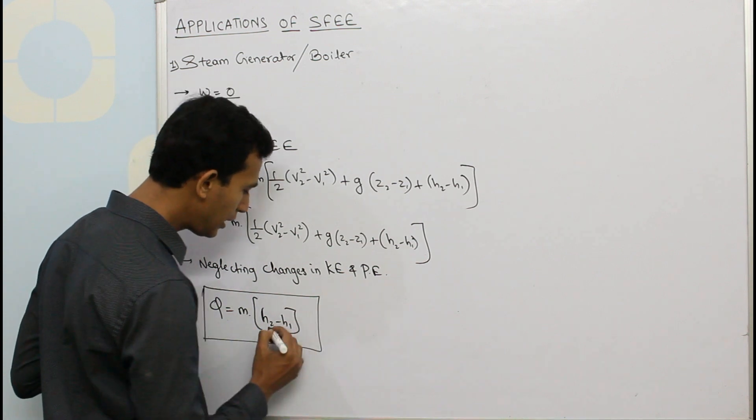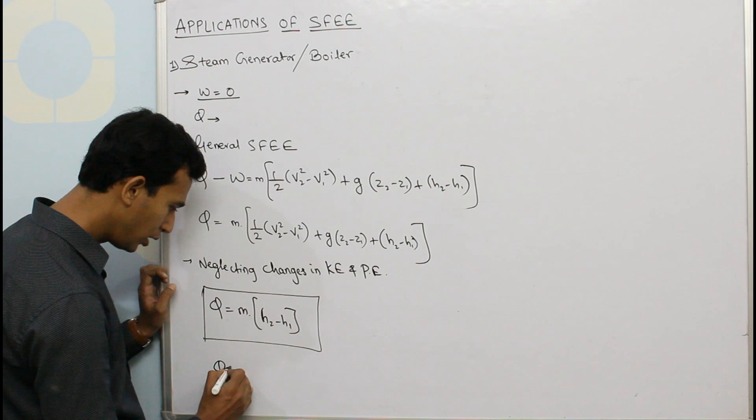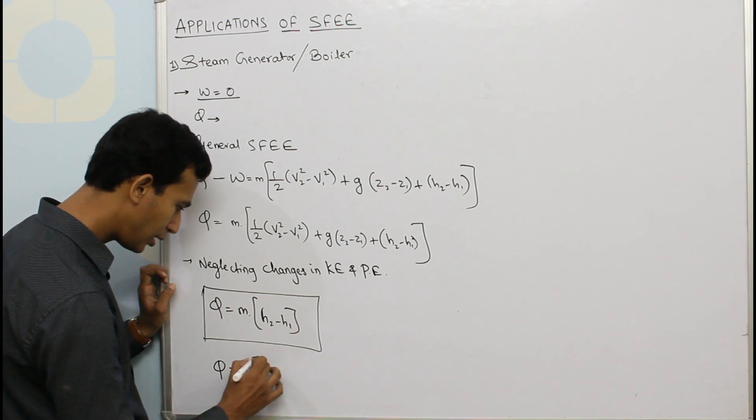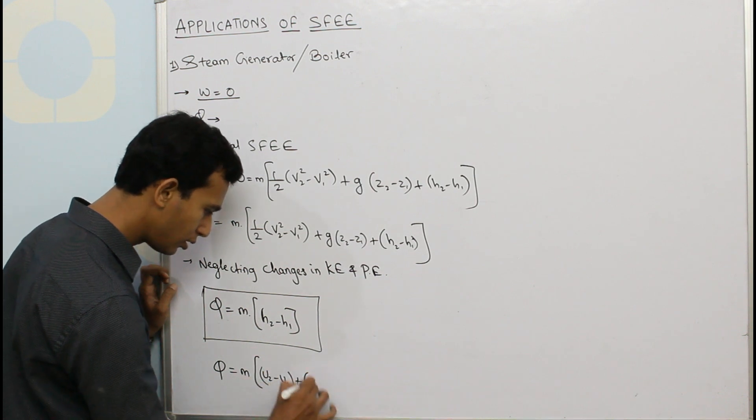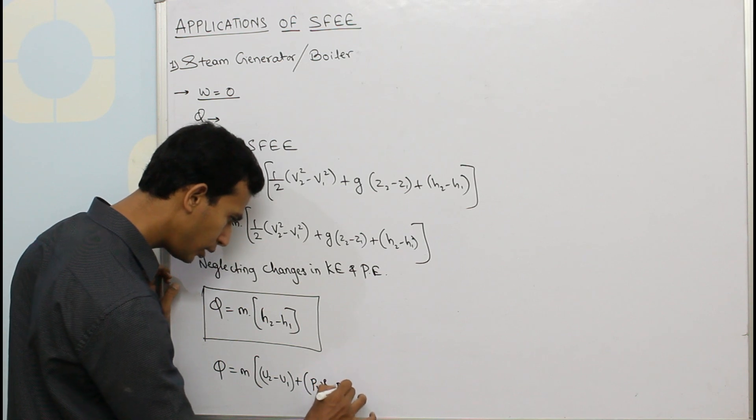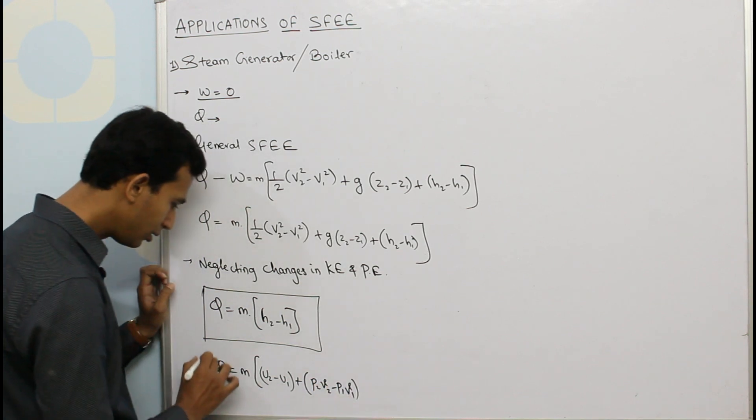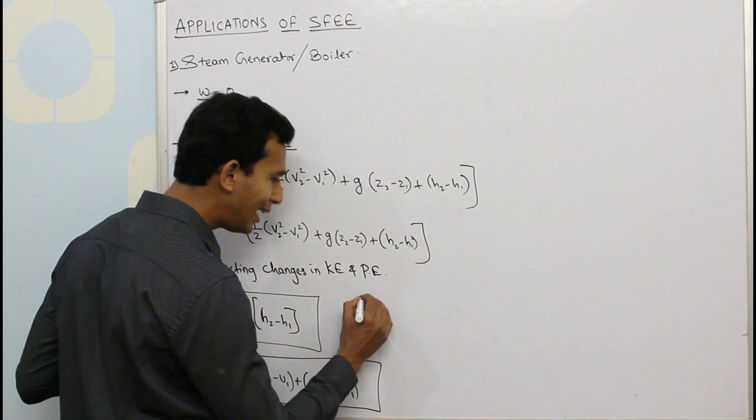In some books you may find here written as Q equals m in bracket U₂ minus U₁ plus P₂V₂ minus P₁V₁. So this is another form of the same equation because H, the enthalpy, is also written as internal energy U plus PV.